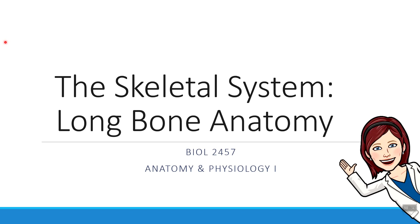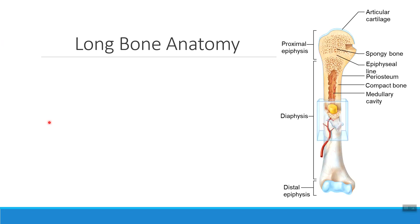Hi everybody, Dr. Aulis here. In this short video we're going to talk about the major important parts of the long bones of your body. When we talk about a long bone in your body, these are most of the major bones you think of when you think of the skeleton. My image over here shows what the humerus looks like. Another major long bone would be the femur, or the radius and the ulna.